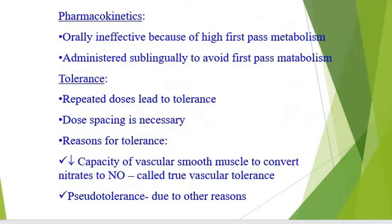Orally, these nitrates are ineffective due to high first-pass metabolism and should be administered sublingually. A problem is that there is tolerance — repeated dosing leads to tolerance and there should be dose spacing. The reason for tolerance is the decreased capacity of vascular smooth muscle cells to convert nitrates to nitric oxide, which is called true vascular tolerance. Pseudo-tolerance may also occur due to different reasons.